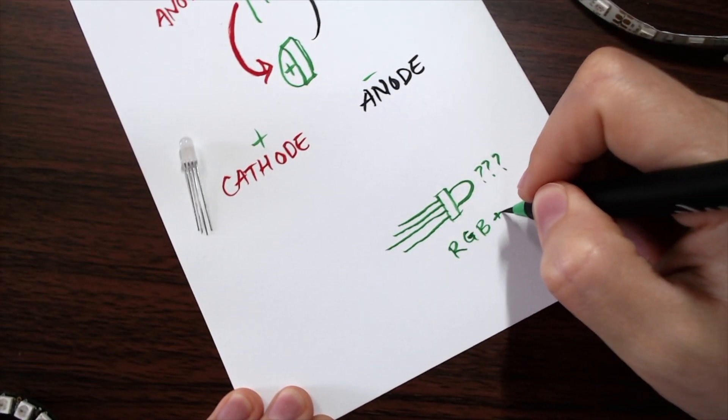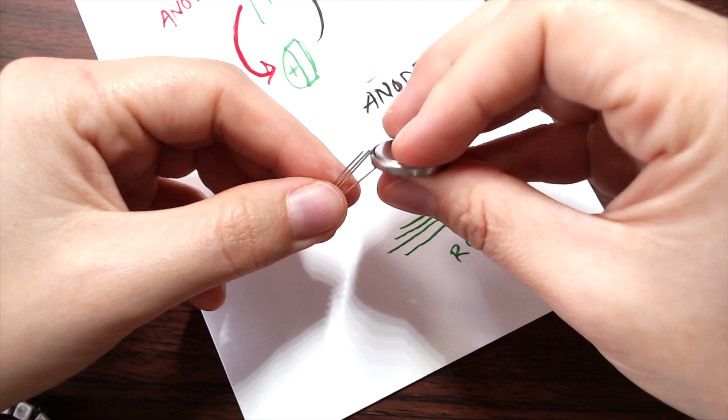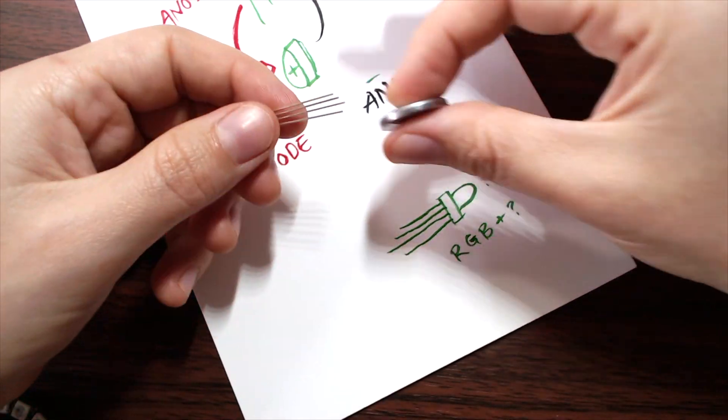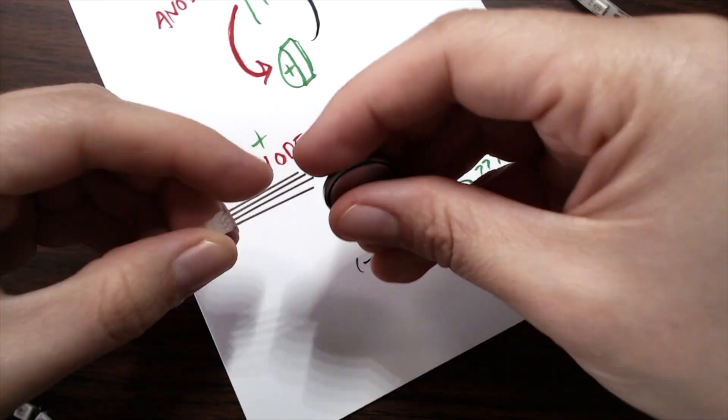There are also RGB LEDs, which encapsulate all three colors in a single module. These will typically have one leg, positive or negative, that serves all three colors, and then for the other leg, each color will have its own. It's essentially three separate diodes in a single package.